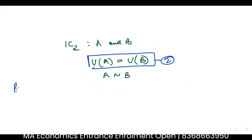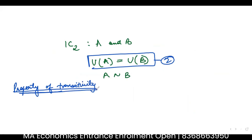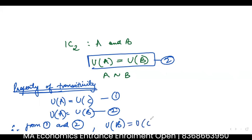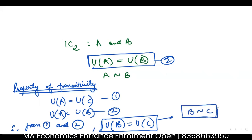I'm going to use the property of transitivity. From transitivity, since utility from A equals utility from C (equation 1), and utility from A equals utility from B (equation 2), therefore from equations 1 and 2, using transitivity, I know that utility from B should equal utility from C — or in other terms, I should be indifferent between B and C.